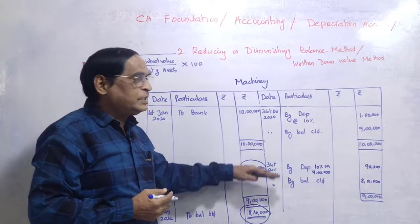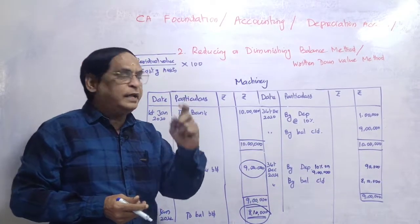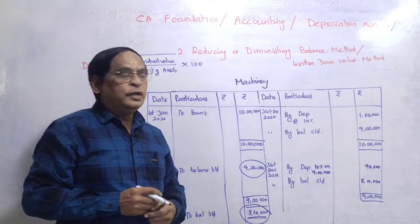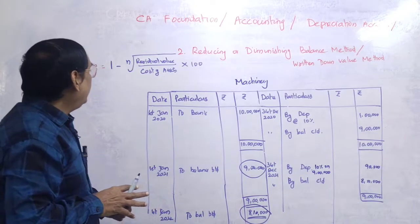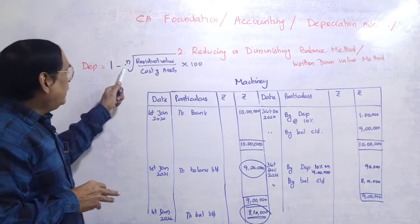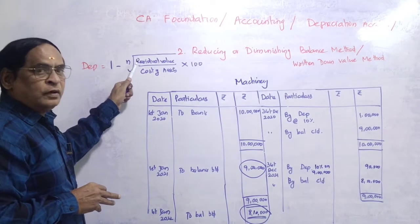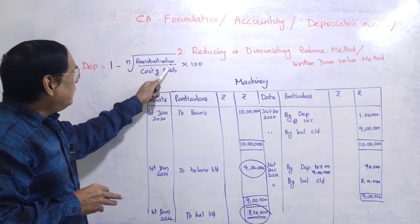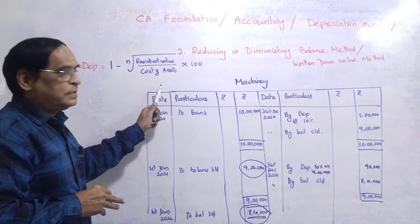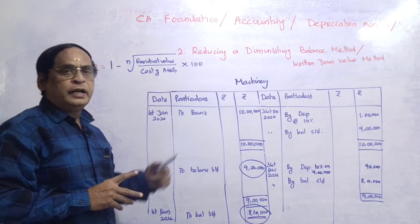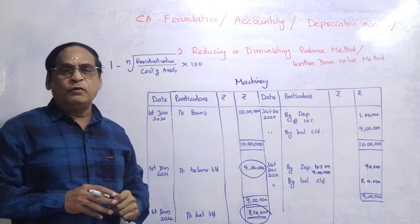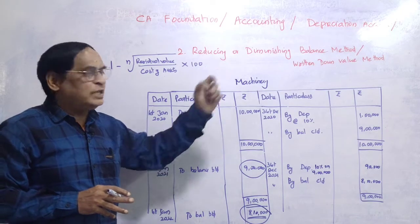So under WDV method, depreciation is not constant — it keeps declining each year. The formula to calculate the WDV depreciation rate is: 1 minus the nth root of (residual value divided by cost of asset), multiplied by 100. That gives you the depreciation percentage under the diminishing balance method.